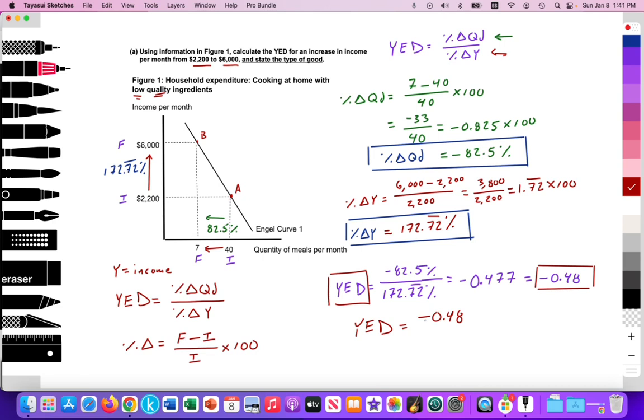So for every 1% change in income, if incomes go up by 1%, then the demand for the good will decrease by 0.48%. So since there's this negative relationship between income and spending, what type of good is this?